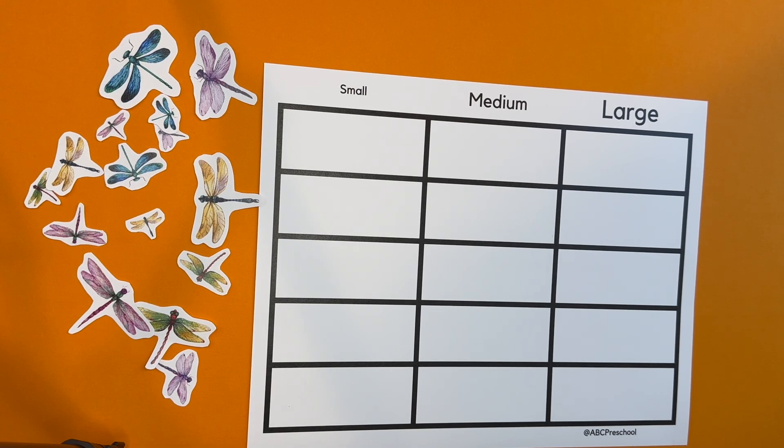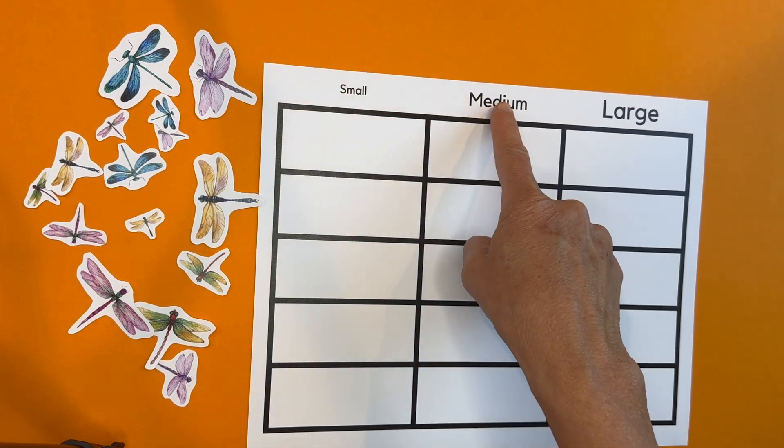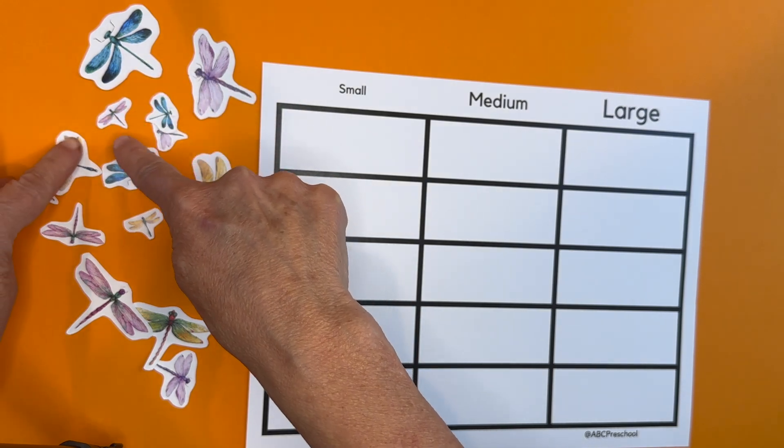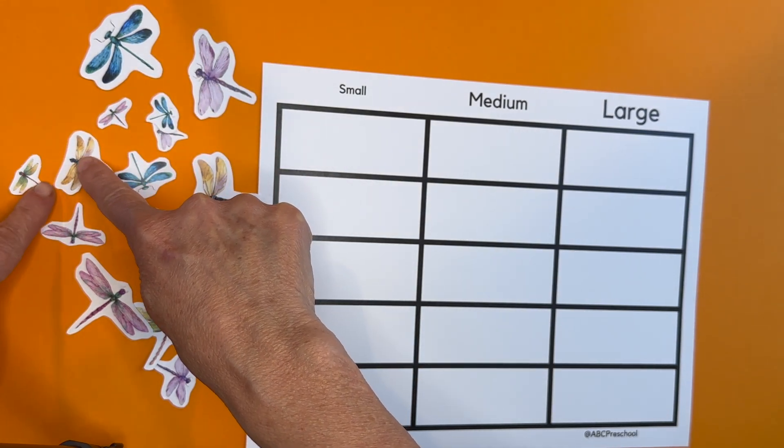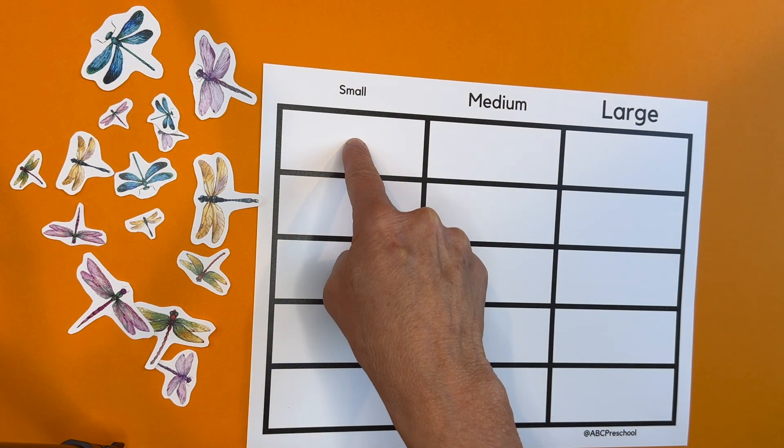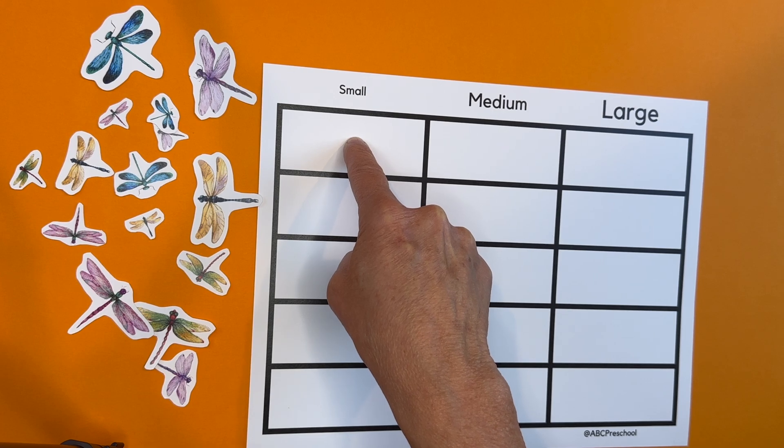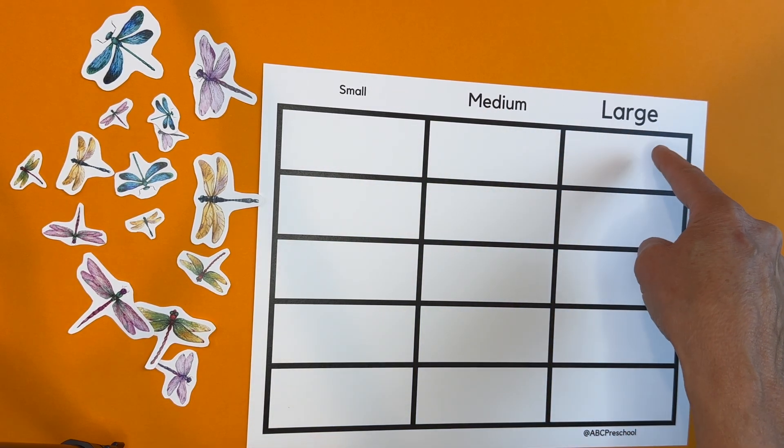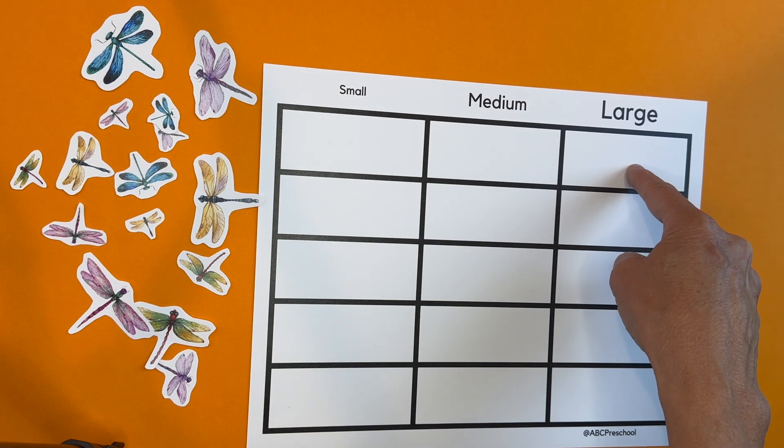Okay, now we're going to do a little activity, and this is a small, medium, and large activity. We're going to take these darling little dragonflies. We're going to match them up in a family of three, and then we're going to put the smallest dragonfly in that family right here, the medium-sized right here, and the large right there.